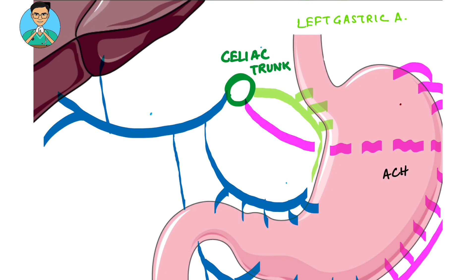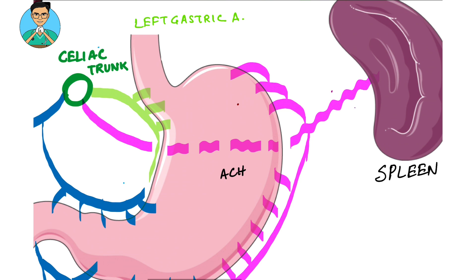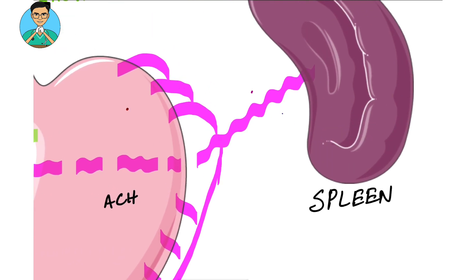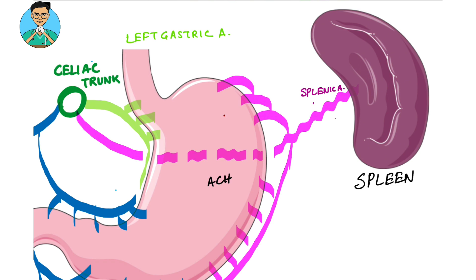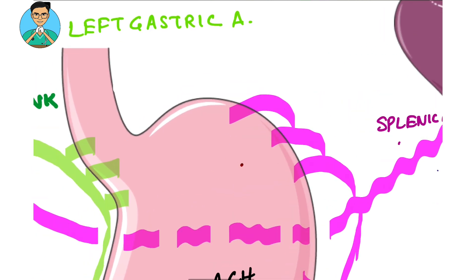The second branch of the celiac trunk — the purple one — is a tortuous artery which moves behind the stomach and goes all the way up to the spleen. This branch is known as the splenic artery. It gives off certain small branches to supply the upper part of the greater curvature of the stomach, and these arteries are known as short gastric arteries.